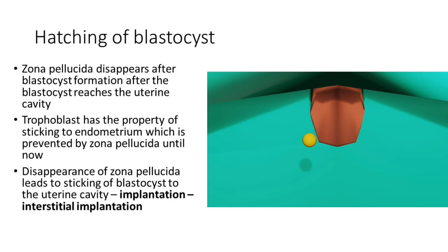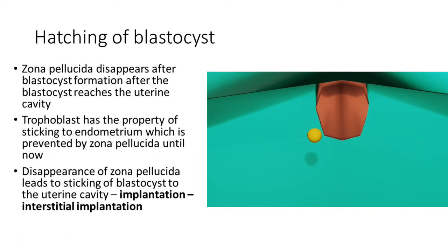Remember the outer layer of cells of the blastocyst, that is the trophoblast? These trophoblast cells have the property of sticking to anything that comes across. They are kind of sticky cells, very quick cells which stick to any structure that comes across or they meet. Until now they are shielded by the zona pellucida, but now that the zona pellucida disappears, this trophoblast shows its true nature.